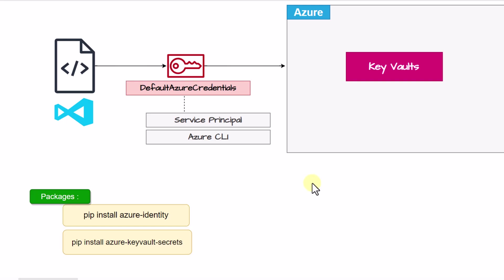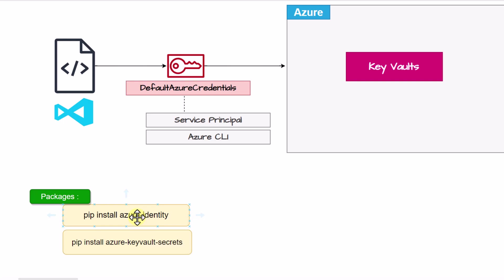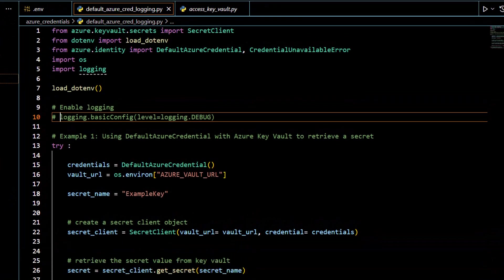In this demo, we are going to create a Key Vault on the Azure platform and retrieve those credentials via Default Azure Credentials. In the code, we will try two particular authentication mechanisms — one is Azure CLI and another is service principal. To get started, we need to install certain packages: first is `pip install azure-identity`, and the second, because we are dealing with Key Vault, is `azure-keyvault-secrets`.